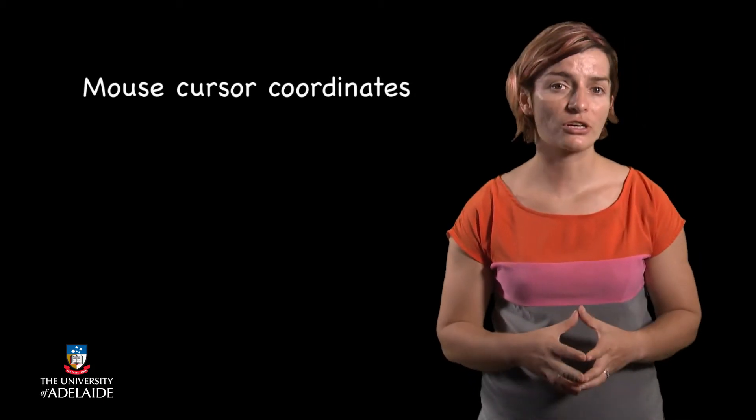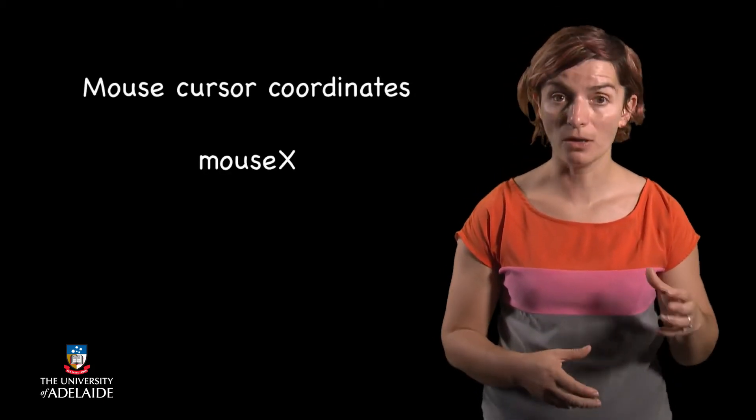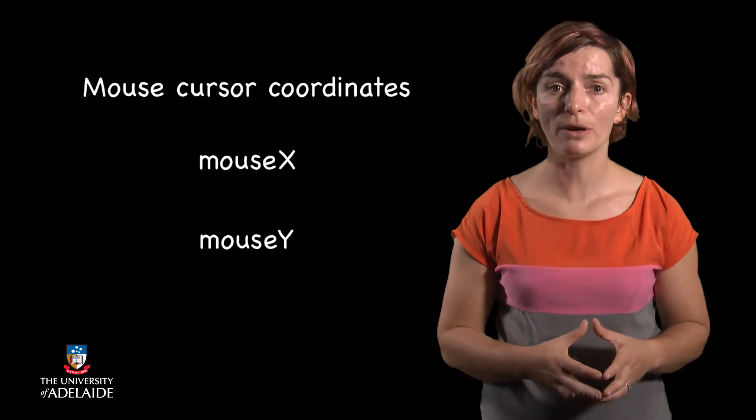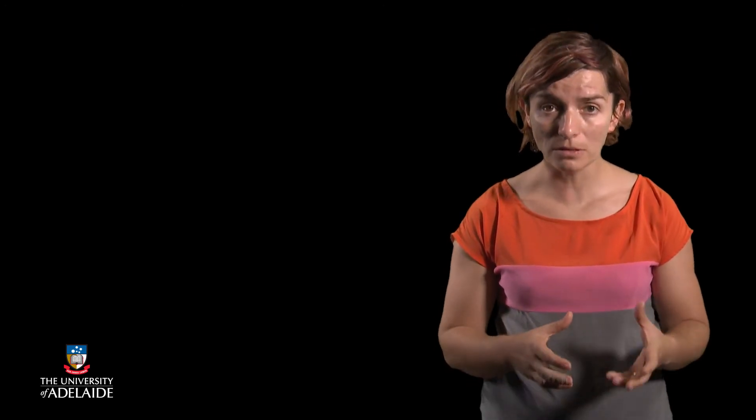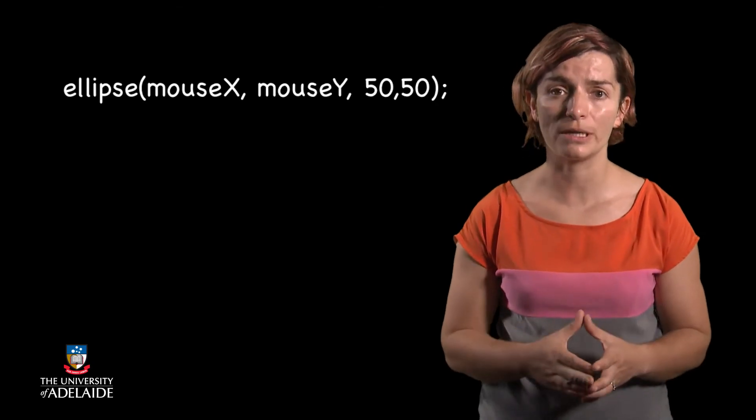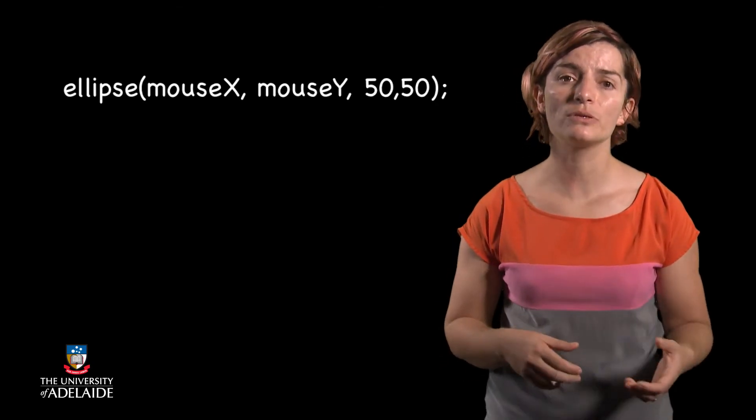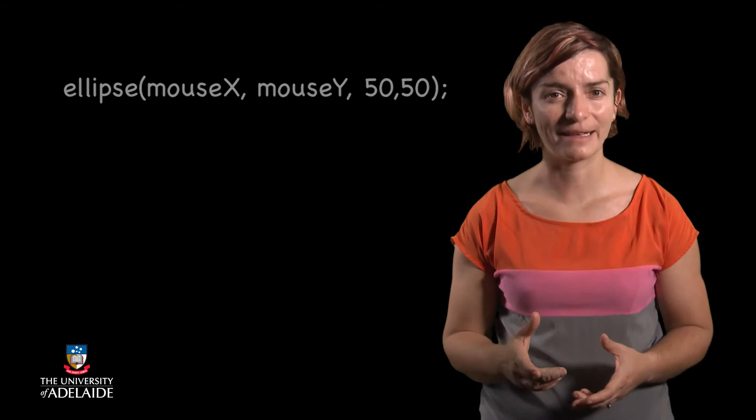In Processing, the mouse cursor has two coordinates, mouseX and mouseY, which represent, you got it, the x and the y coordinates of the cursor. Let's try to draw a circle with the center in the position of the mouse. To do so, instead of using the usual x and y coordinates for the ellipse center, we will be using mouseX and mouseY, like this.